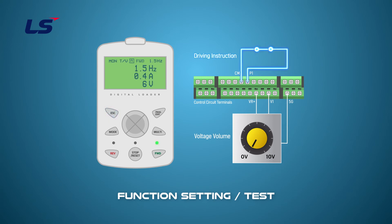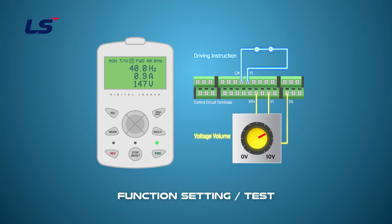Turn on the P1 terminal to drive the motor, and then increase the command frequency to the maximum through the V1 voltage input. Check the frequency on the keypad to verify that it is not operating at more than 40 Hz. After a while, lower the input value and slowly keep lowering at around 20 Hz to see how the output frequency varies.